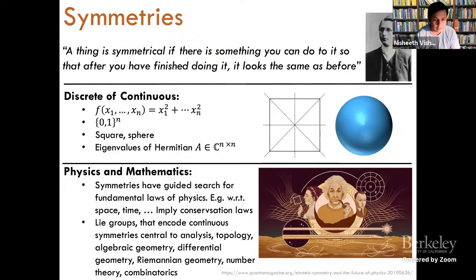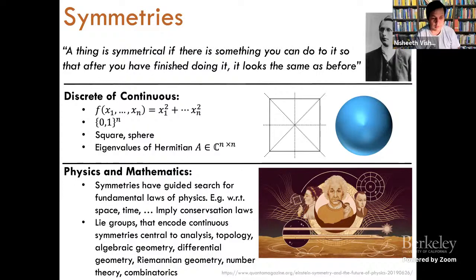In mathematics, continuous symmetries, which are encoded by Lie groups, are extremely central to many branches of mathematics. As you saw in Avi's talk, all these connections are not completely accidental. There are many connections that exist even to discrete objects like combinatorics. You'll see why, even though we may focus on continuous symmetries, discrete symmetries arise very naturally — that's a theme you will see in this talk arising a couple of times.